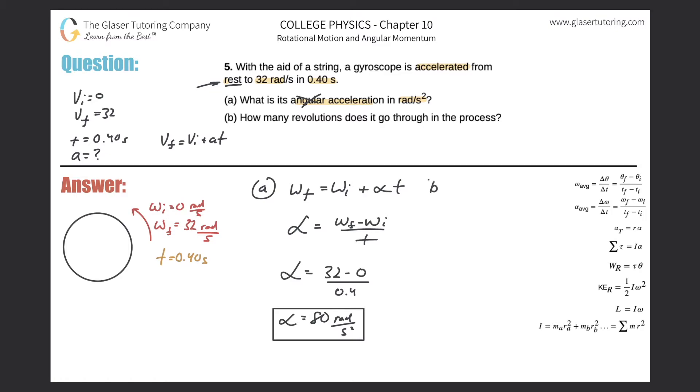That is in terms of radians per second squared. That takes care of letter a.